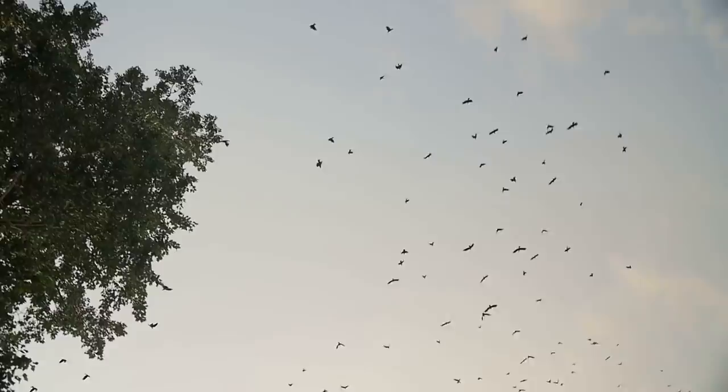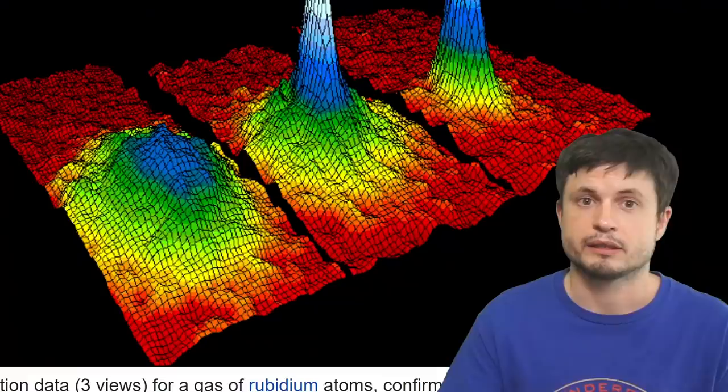Another good example, I guess, would be a really large flock of birds. Individual bird is not going to be doing the same as a larger flock. And the larger the flock, the more unusual properties it's going to possess. So something similar happens in BECs and a lot of quantum objects. They start to acquire different properties.